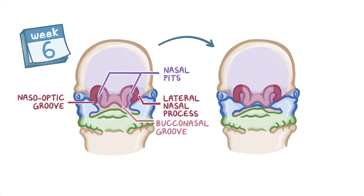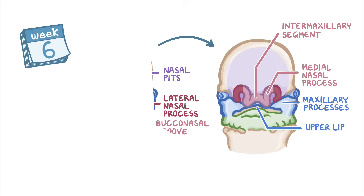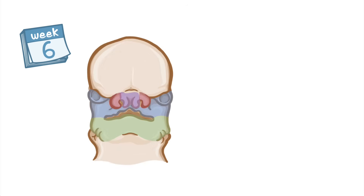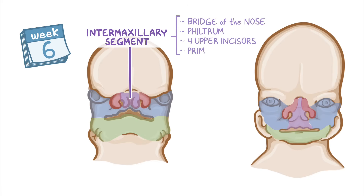By the end of week 6, the maxillary processes fuse with the medial nasal processes on each side, forming the upper lip. Around the same time, the two medial nasal processes come together, forming the intermaxillary segment. The intermaxillary segment then develops into the bridge of the nose, the philtrum or center of the upper lip, the middle part of the maxillary bone and the four upper incisor teeth, and the primary palate.